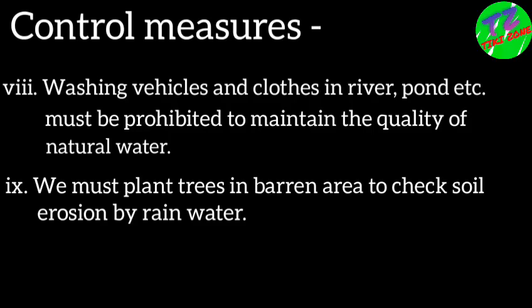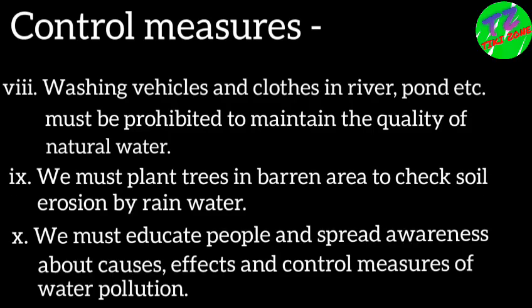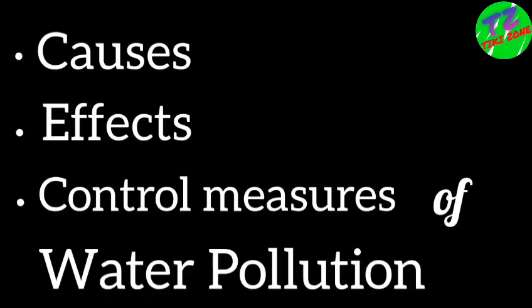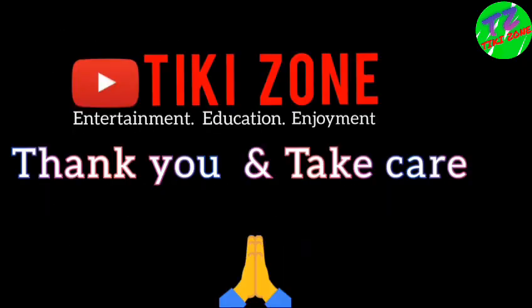We must plant trees in barren areas to check soil erosion by rainwater. We must educate people and spread awareness about the causes, effects, and control measures of water pollution. These are some causes, effects, and control measures of water pollution we discussed in this video. Thanks for watching.